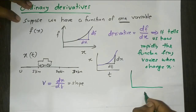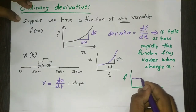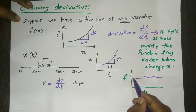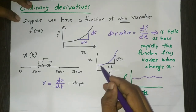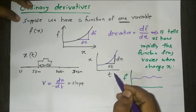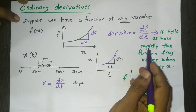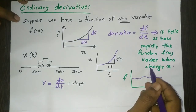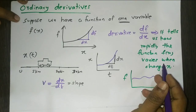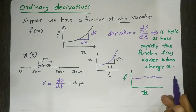If you have a graph of x versus f, and the function is such that here the function varies very slowly but here the function varies very fast, the ordinary derivative gives us that information — it tells us how fast the function varies. That is the concept of the ordinary derivative.